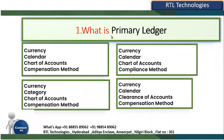The first question is: what is a primary ledger? As a finance functional consultant, we are supposed to specify involvement in enterprise structure as well as primary ledger creation. So what is the definition for a primary ledger? What are the objects? Is it currency, calendar, chart of accounts, and compensation method? Or currency, category, chart of accounts, and compensation method?